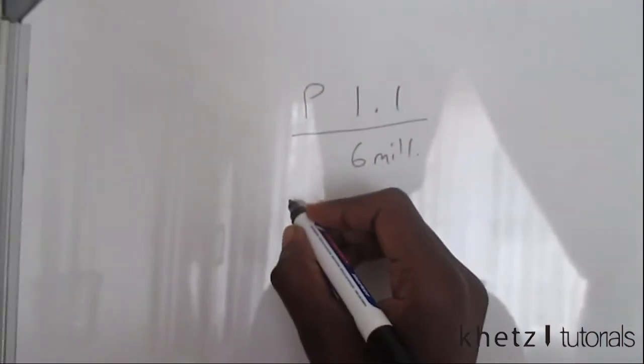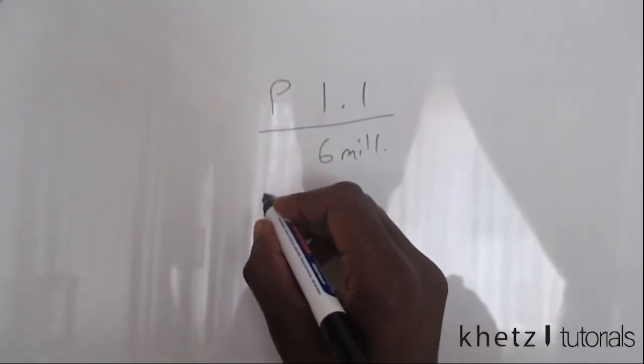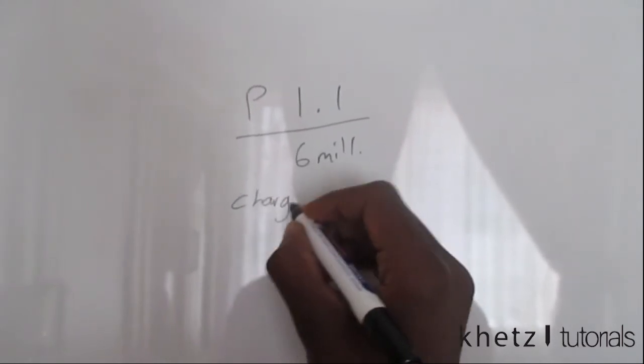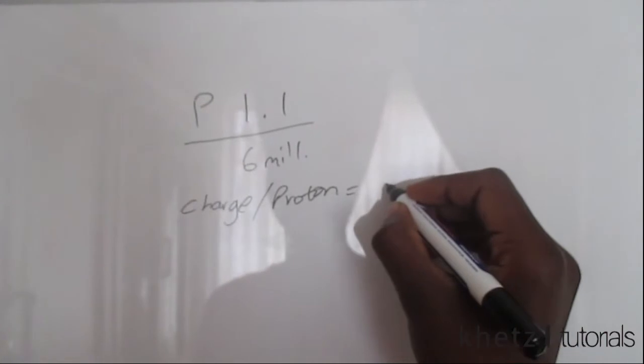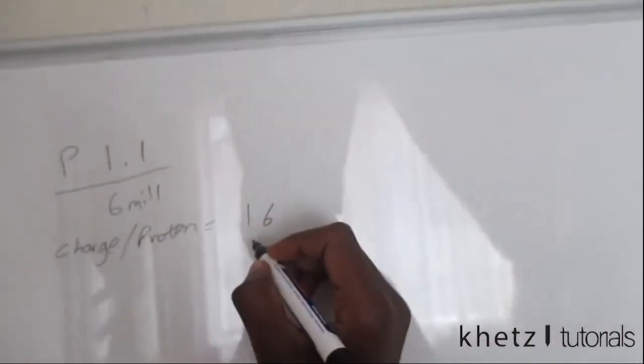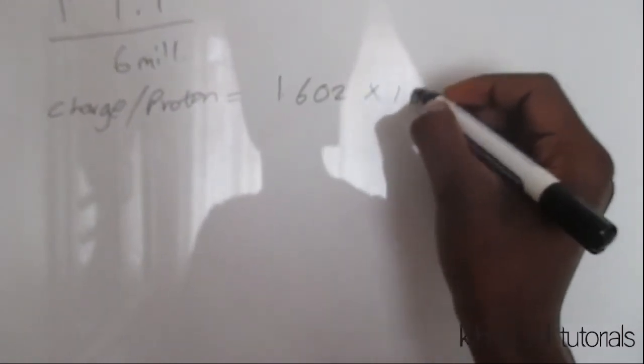We know that the charge of a single proton, charge per proton, is equal to 1.602 times 10 to the minus 19.